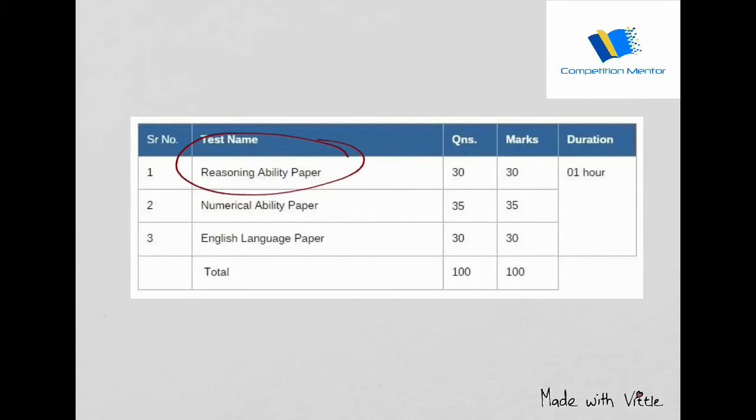If there is some tough caselet, you need to leave it and do not waste a lot of time. All your agenda should be, if the reasoning ability paper is tough, spend some time, try to cross the cutoff. If 11 or 12 may be the cutoff, then just do at least 21, 22, 25, whatever you can do and clear the cutoff, and you can manage in any of the sections.